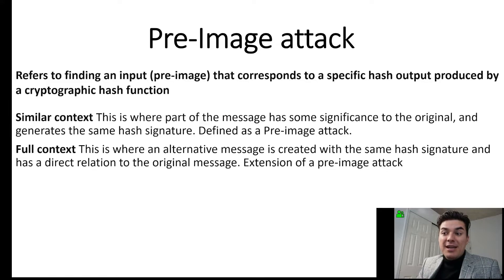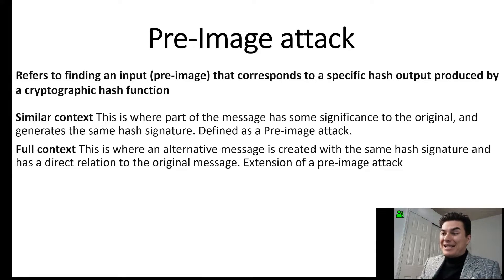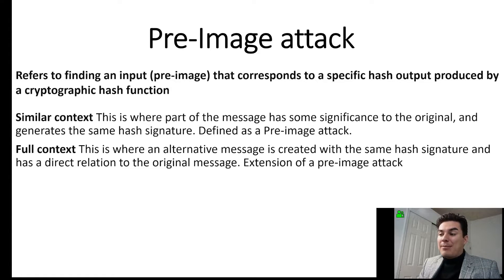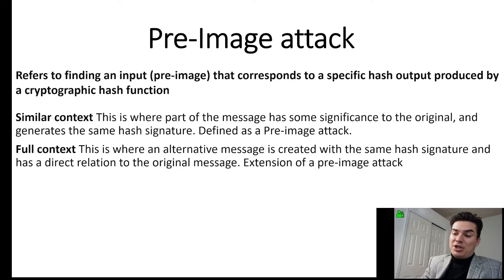Now a pre-image attack refers to finding that input that corresponds to a specific hash output produced by a cryptographic hash function. So this one is an attack because it's on purpose. The similar context is where part of the message has significance to the original and it generates the same hash value. The full context is where an alternative message is created with the same hash signature and has direct relation to the original contents. This is an extension of the pre-image attack.